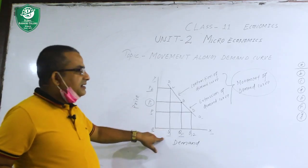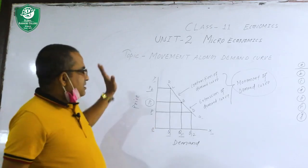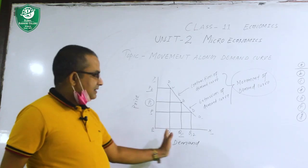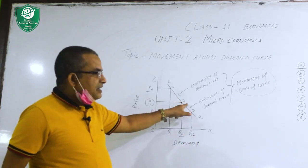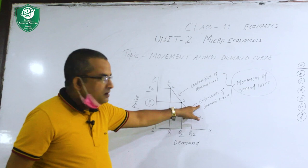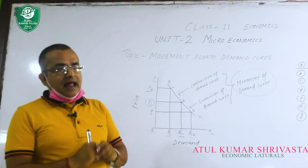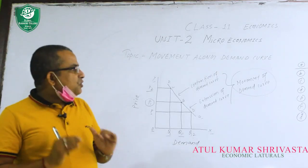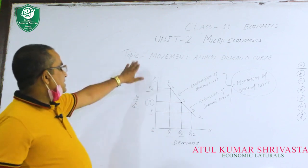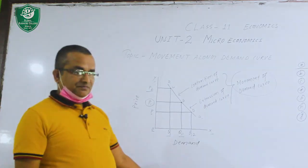The movement along the demand curve especially happens due to change in price. When price increases, demand decreases and the demand curve moves from right side downward to left side upward — this is called contraction of demand curve. When price decreases, demand increases and the demand curve moves from left side upward to right side downward — this is called extension of demand curve. Both processes together are called movement of demand curve. Thank you.